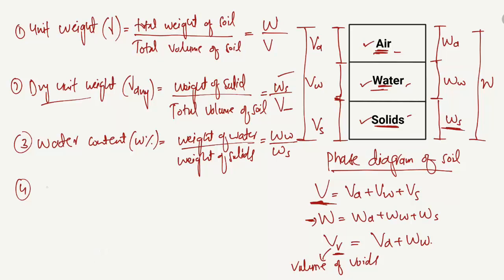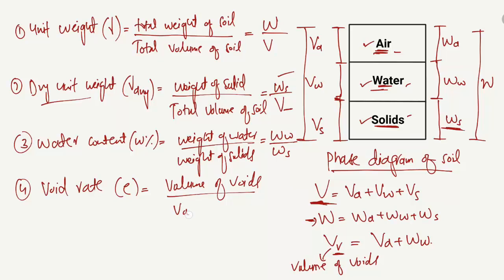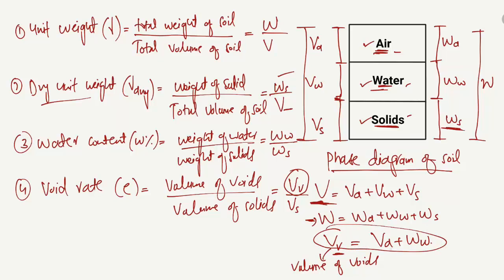The void ratio is represented by e, and it is equal to the volume of voids (VV) divided by the volume of solids (VS), so e = VV / VS. The volume of voids VV is the combination of the volume of air and the volume of water, divided by the volume of solids.